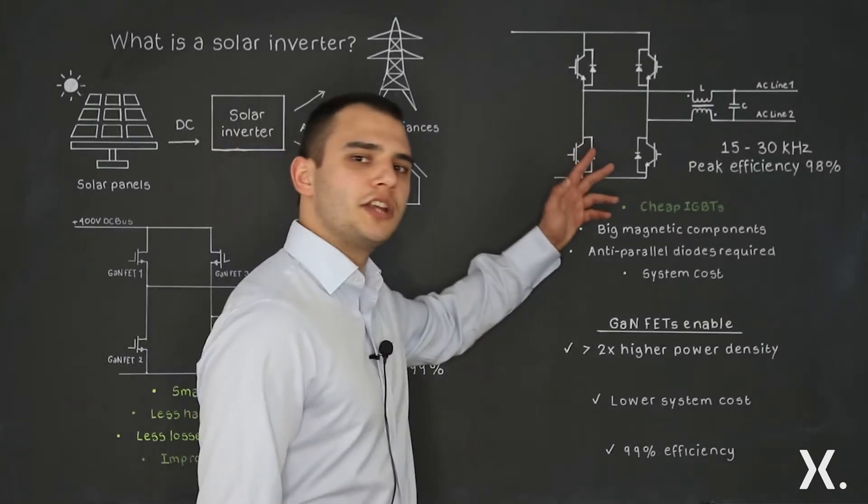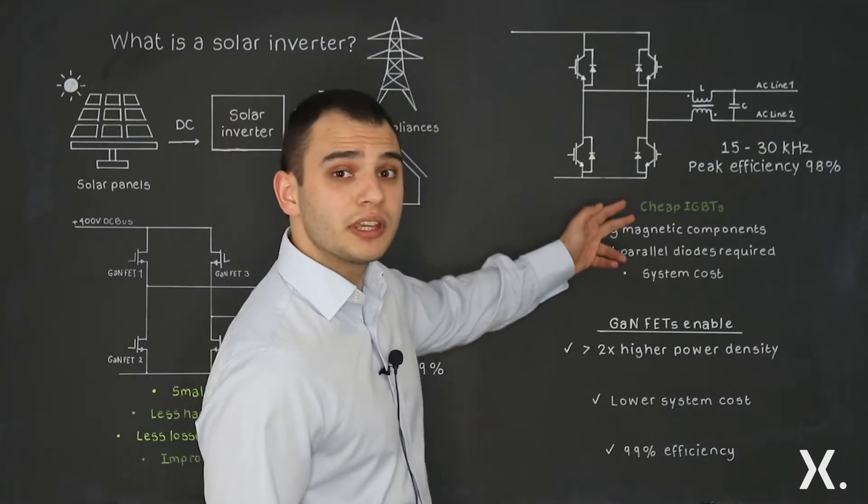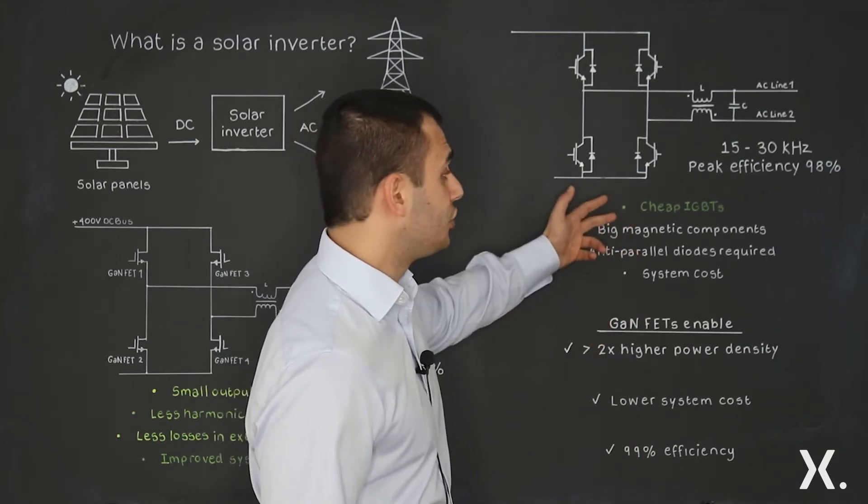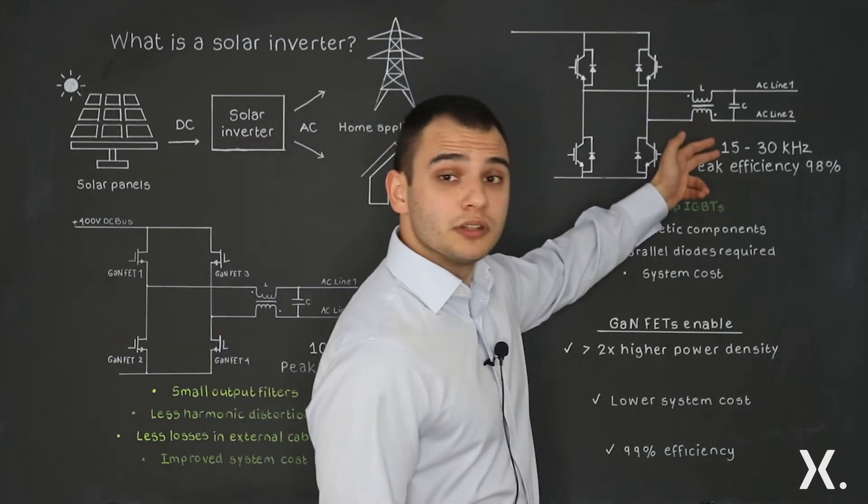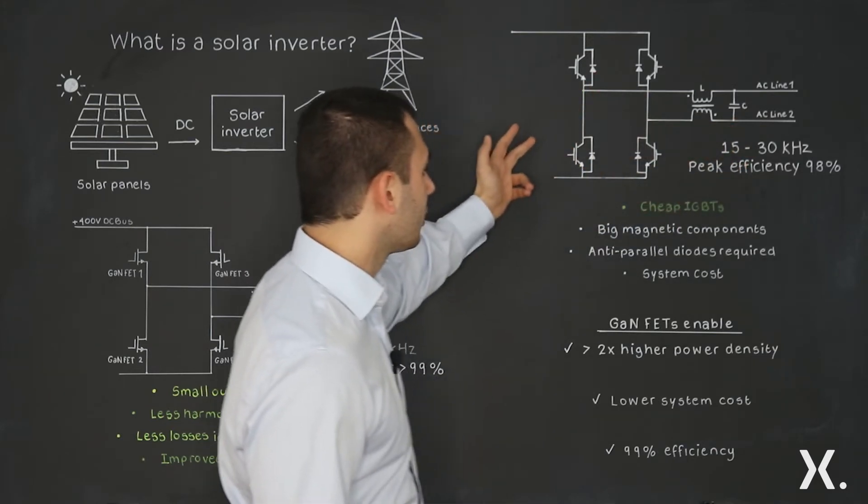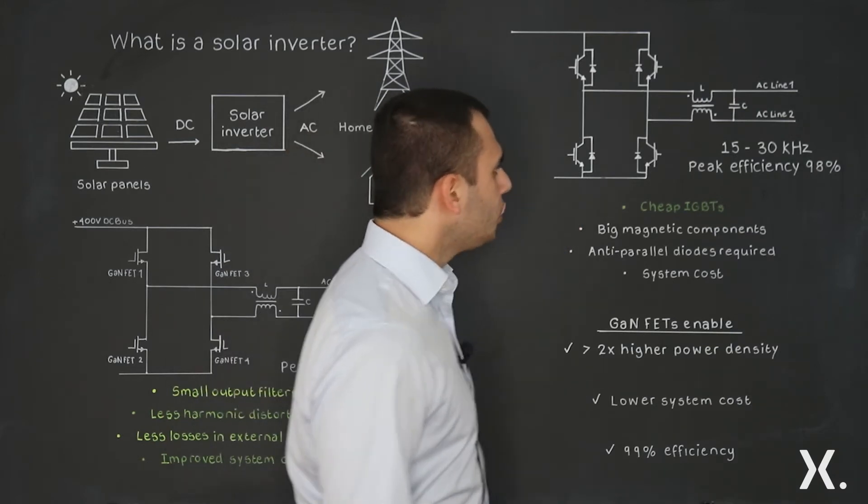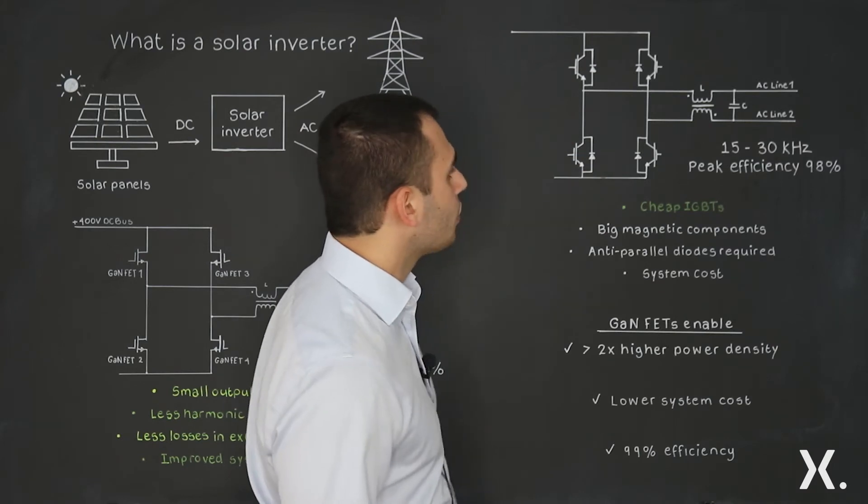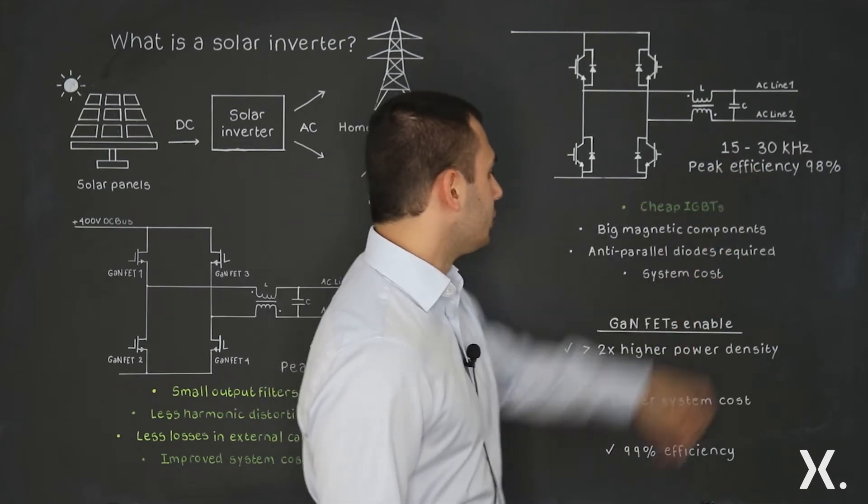Now let's consider the IGBT-based DC-AC converter. First, the benefit of having an IGBT-based DC-AC converter is the inexpensive IGBTs. But the drawback is the limitation in frequency where you have 15 to 30 kHz with this converter. This results in quite big magnetic components. You also need anti-parallel diodes with these IGBTs to achieve the peak efficiency of 98% and go to that frequency as well.